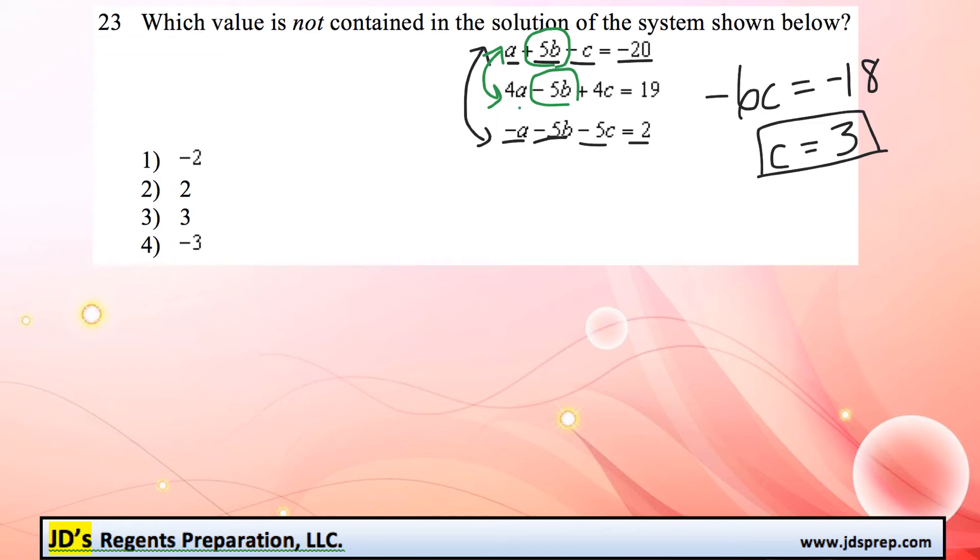So a plus 4a would be 5a. The b's cancel out, and then we'll have negative c plus 4c, that would be positive 3c, equals negative 20 plus 19, that would be negative 1.